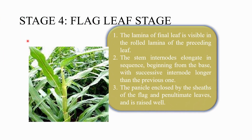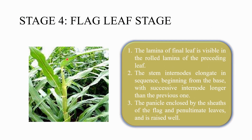The fourth stage is the flag leaf stage. The lamina of the final leaf, the flag leaf, is visible with a rolled shape. The internodes elongate in sequence beginning from the base, with each successive internode expanding further. The panicle is enclosed by the sheaths of the flag and penultimate leaves and is raised well at this important stage.